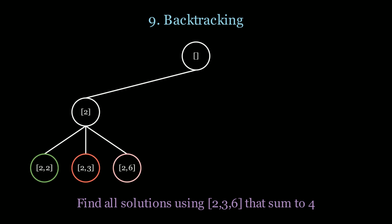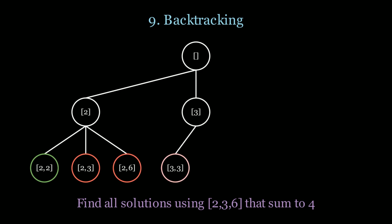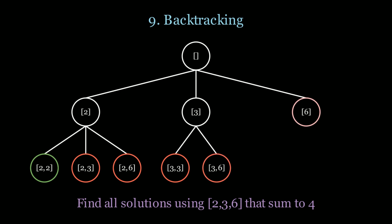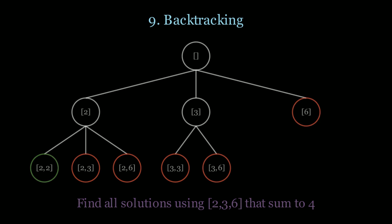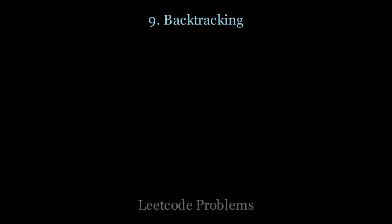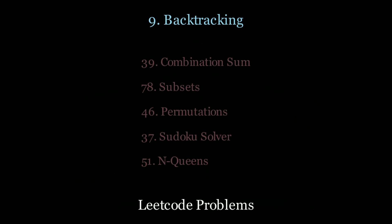Similar for 2 and 6. At 3 and 3 we're also greater than 4, so we prune those branches too. Notice how efficient we are by pruning branches we don't need to look at. For more practice, look at the following LeetCode questions.